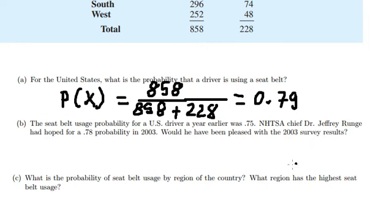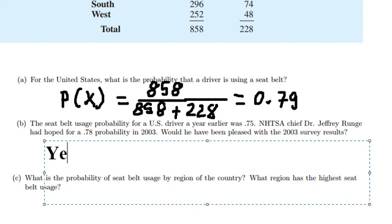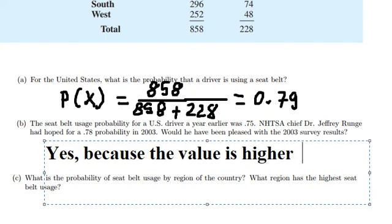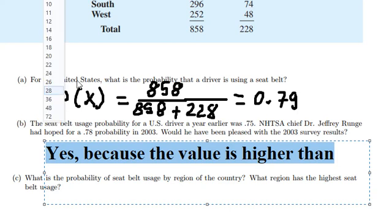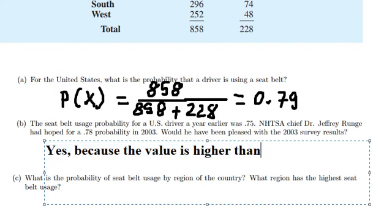So we see that we have 0.79. However, this one and this one is smaller than this value in here. So we can say that yes, because the value is higher than the expectation.